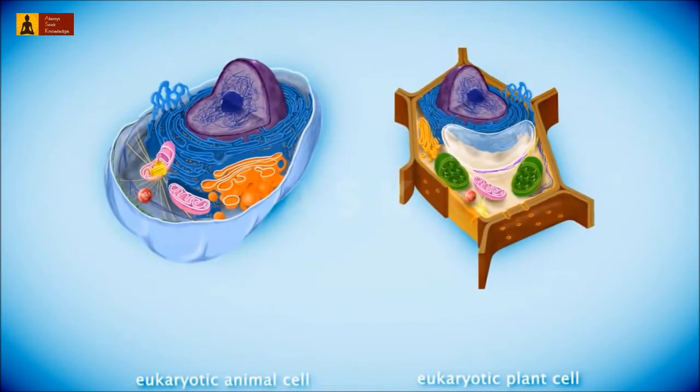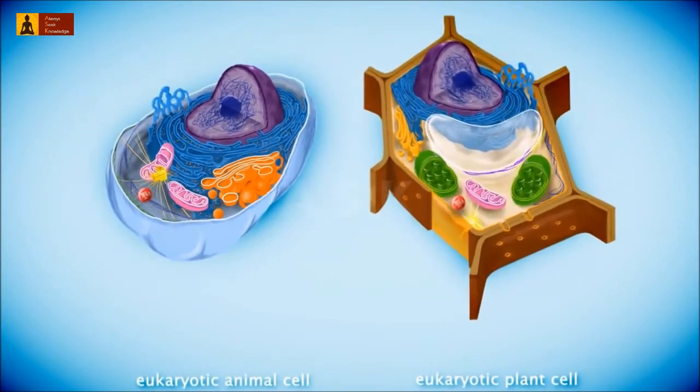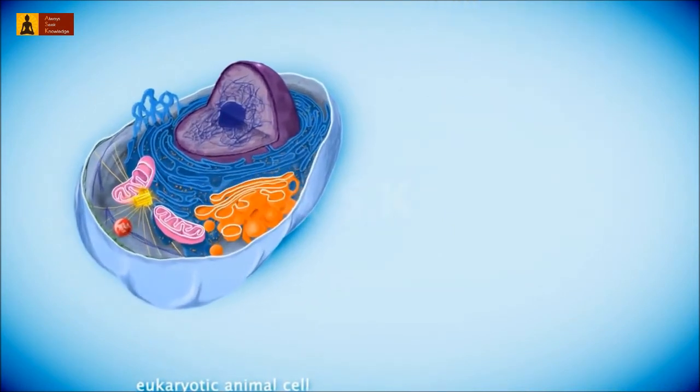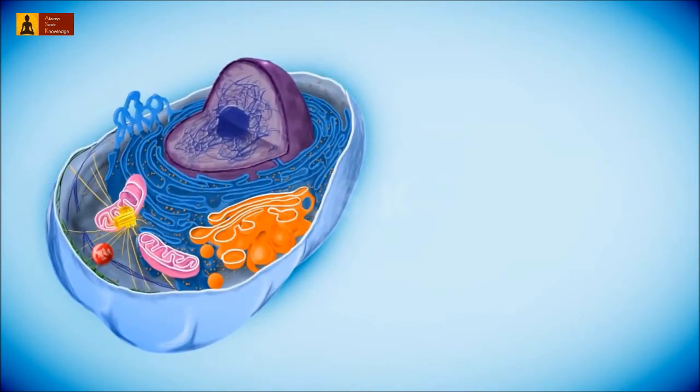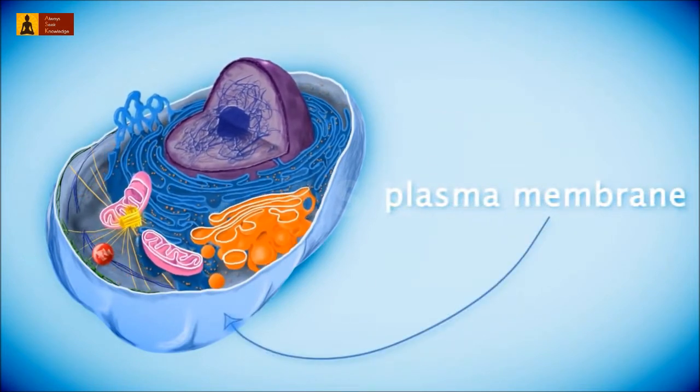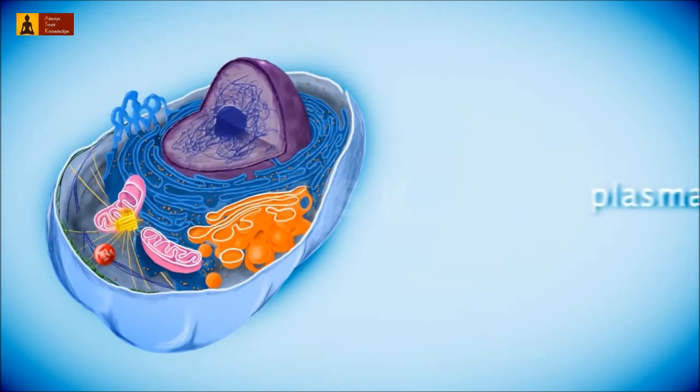We will look at the two main eukaryotic cells: animal cells and plant cells. Animal cells cannot make their own food and must rely on the consumption of other materials. Animal cells have a plasma membrane like a prokaryotic cell has, but they do not have a rigid cell wall.